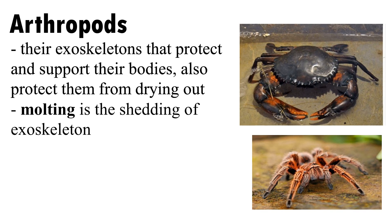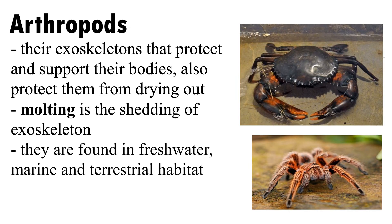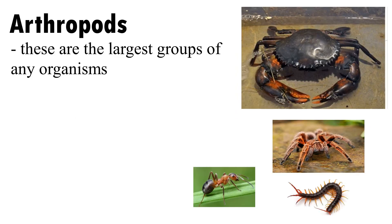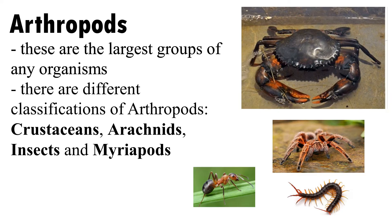Molting is the shedding of exoskeletons. Arthropods are found in fresh water, marine, and terrestrial habitats. They are the largest group of any organisms. There are different classifications of arthropods: crustaceans, arachnids, insects, and myriapods.